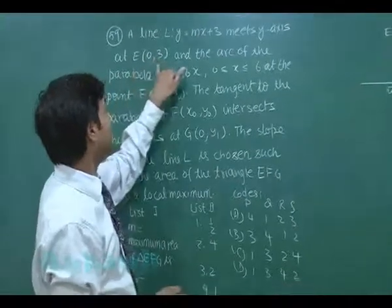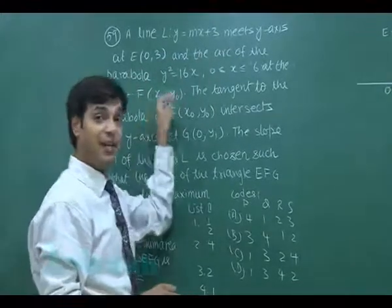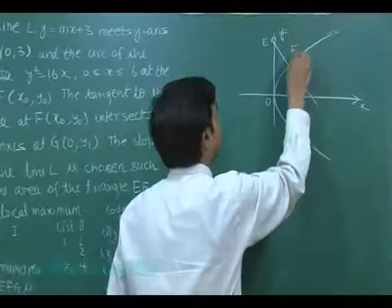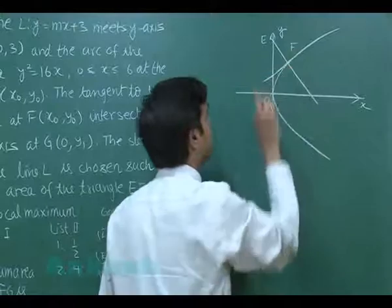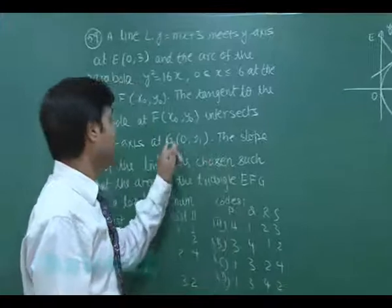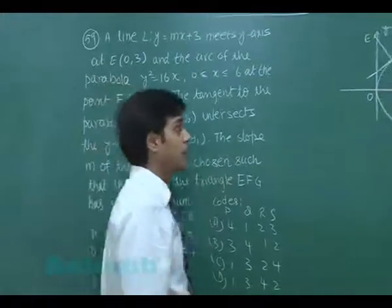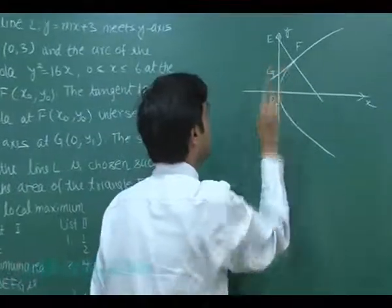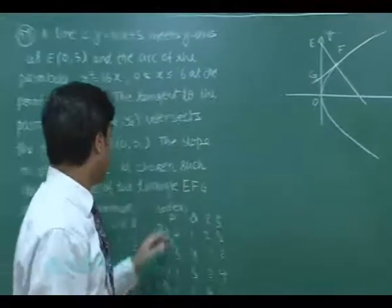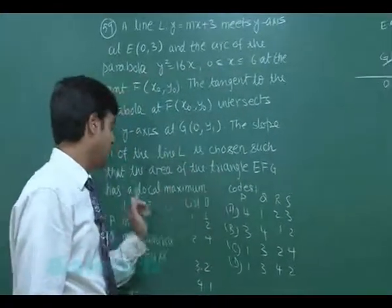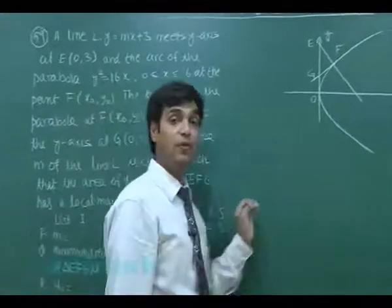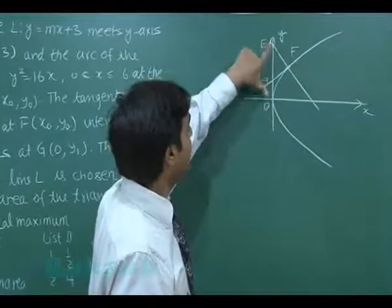Line l meets the y-axis at E and the arc of the parabola at F, that is (x₀, y₀). The tangent at F meets the y-axis at another point G(0, y₁). So the geometry is set up with points E, F, and G forming a triangle whose area we need to maximize.